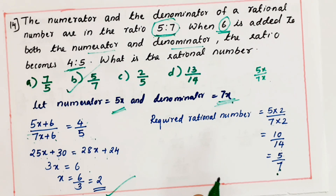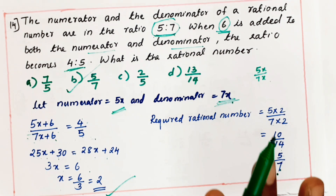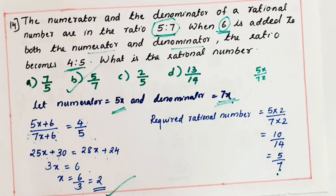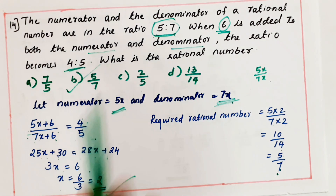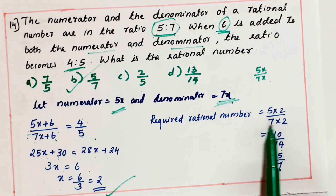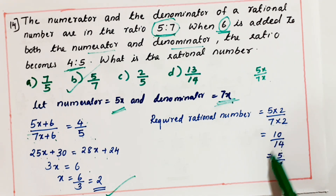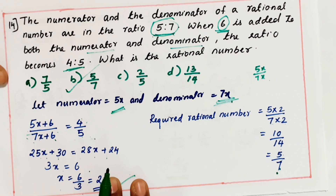The required number is 5 by 7. The ratio is given in that form only, so in the same form the answer should come. Even if you do other operations in the middle, their ratio always remains 5 by 7. So I took 5x and 7x, added 6 to each, got 4 by 5, cross multiplied, got x equal to 2. The number is 10 by 14, but dividing numerator and denominator by 2 gives 5 by 7.